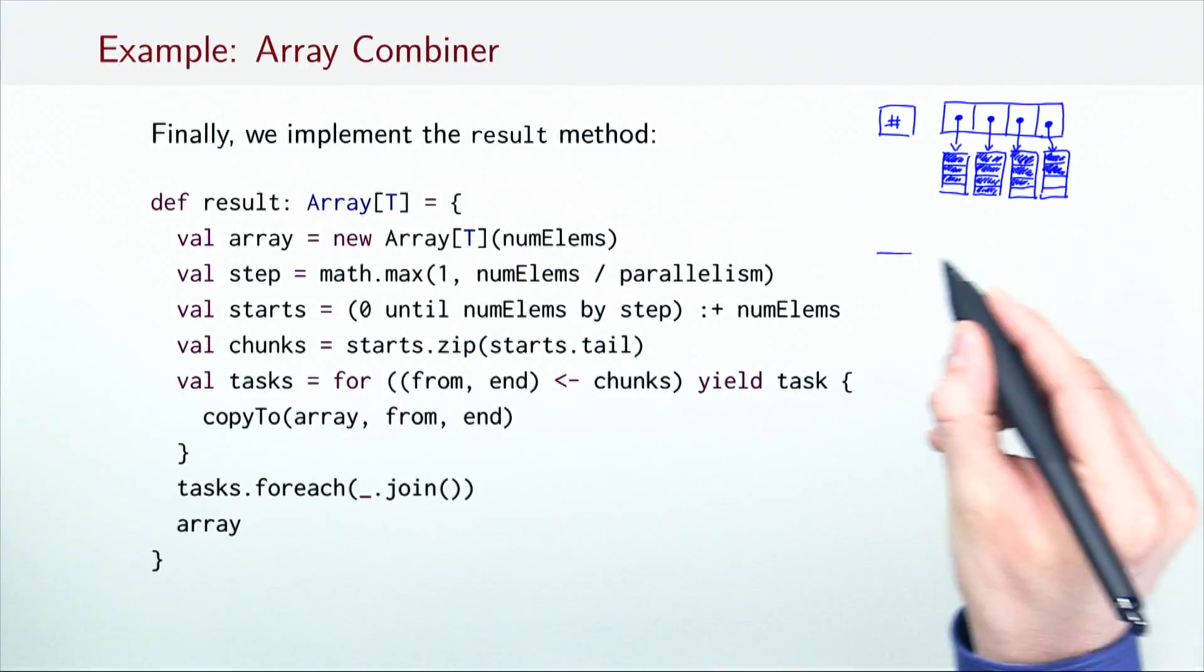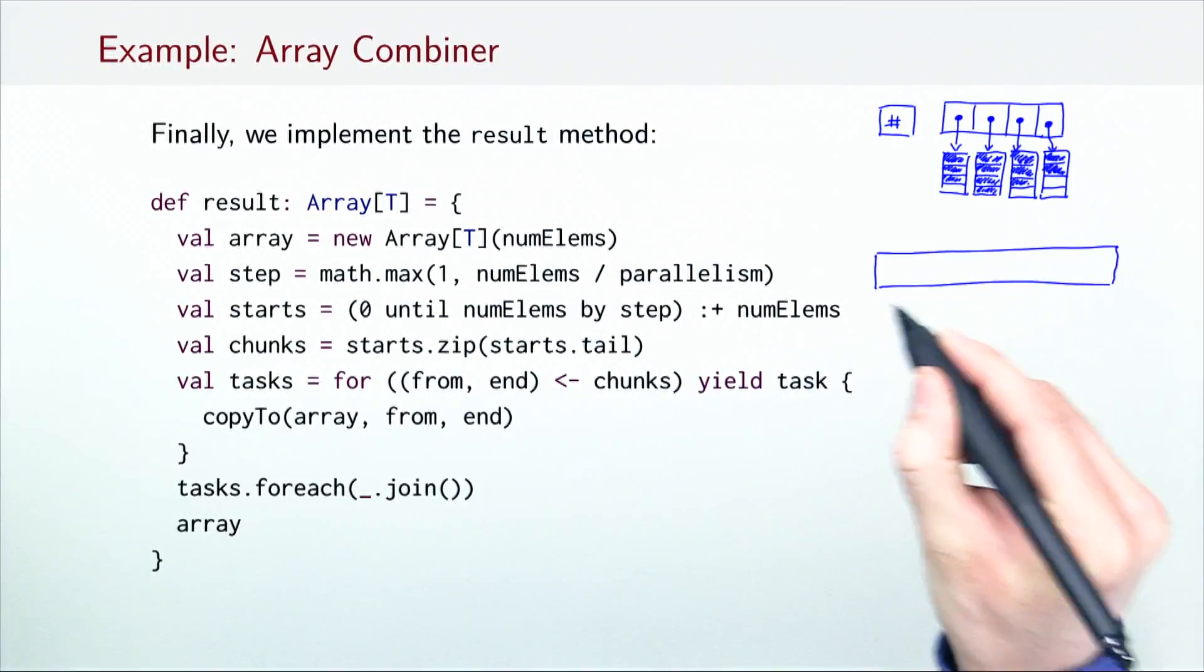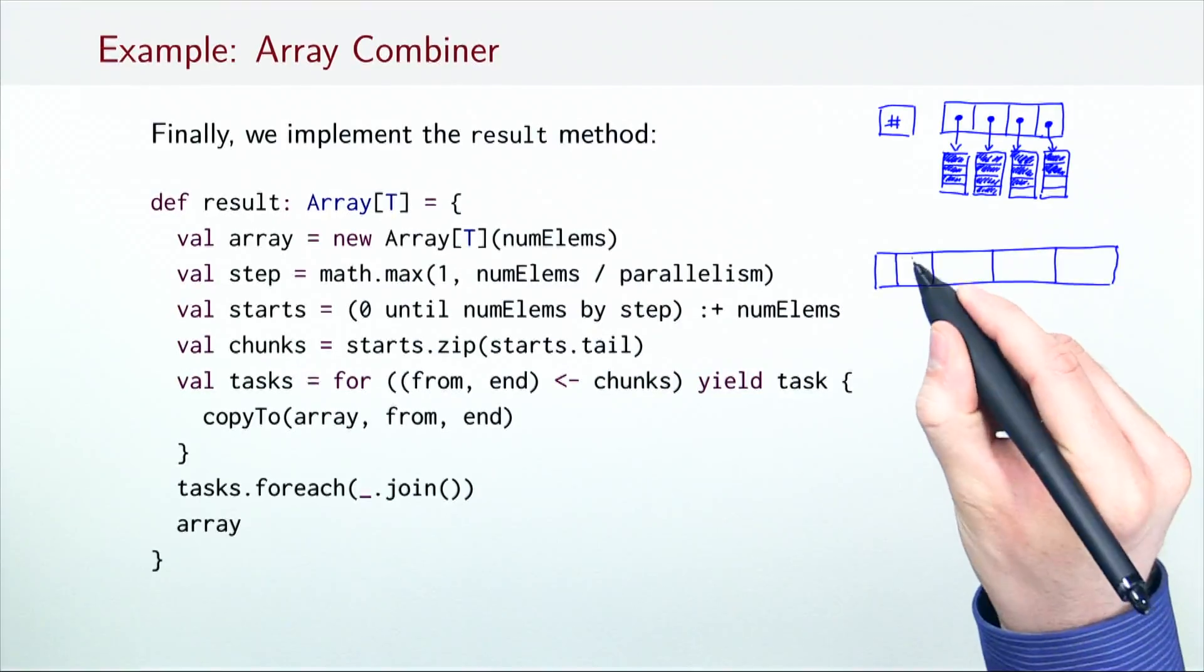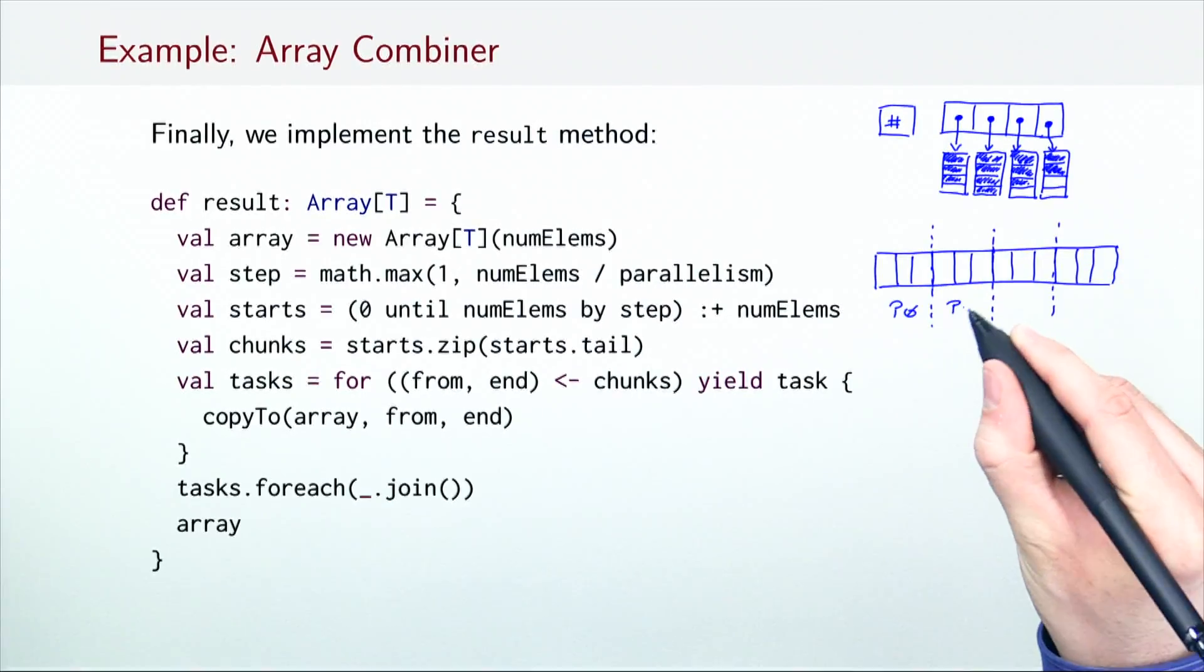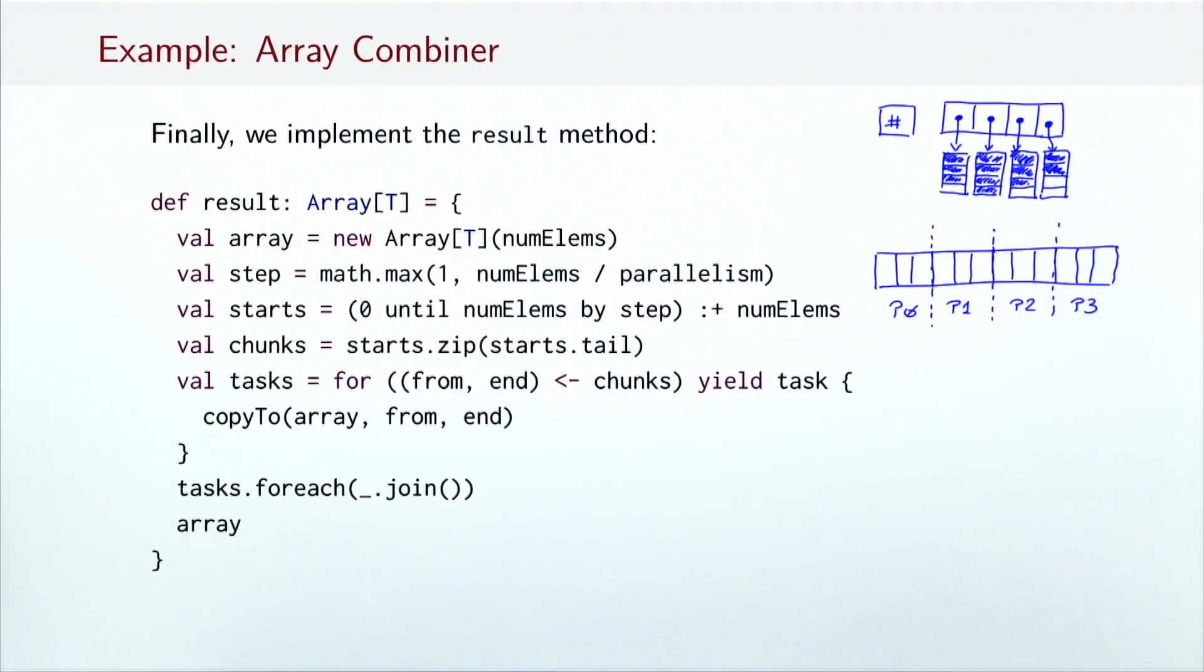Finally, we can implement the result method. Once we have the root intermediate data structure, we know the required size of the array from the num elements field, so we allocate the resulting array. We then divide the array indices into chunks, pairs of starting and ending indices that each parallel task should in parallel copy. We start these tasks, wait for their completion and then return the array.